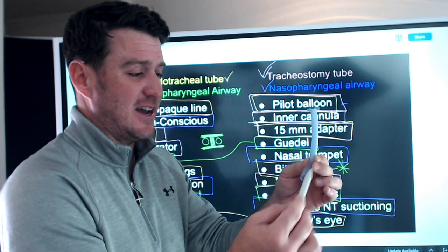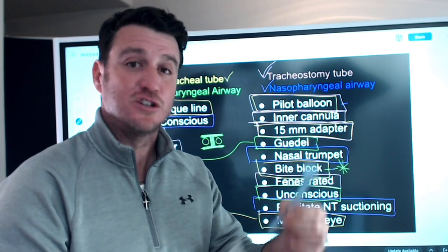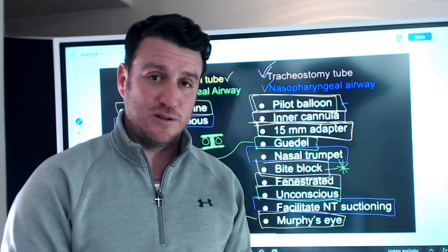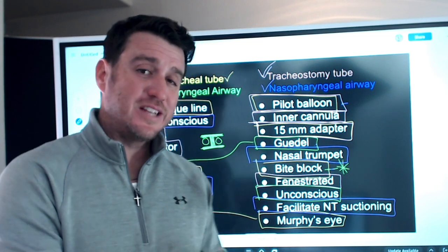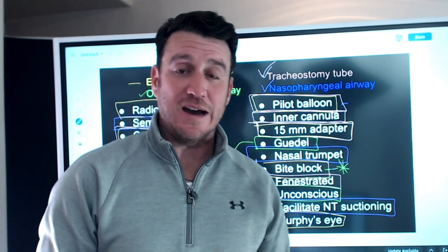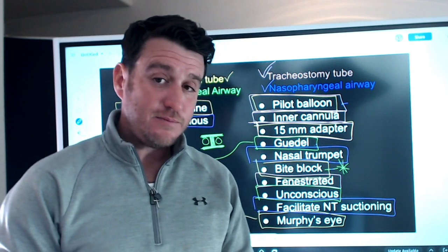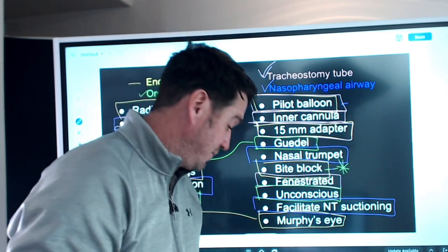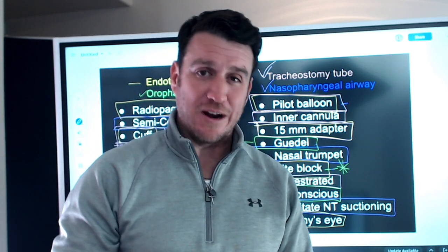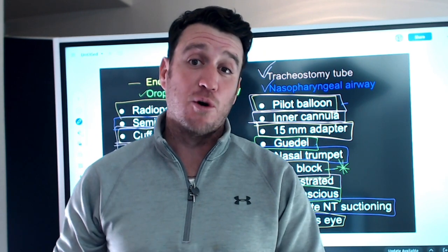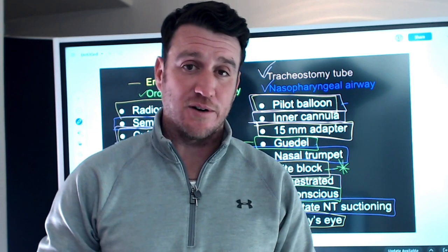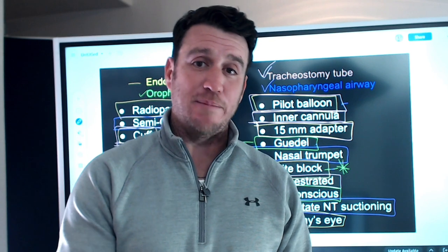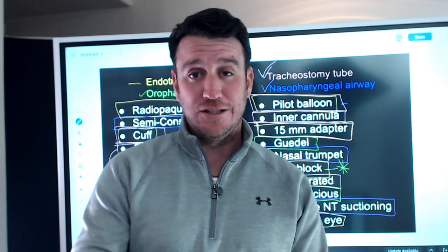Bite block — doesn't go in the mouth, so no. No fenestrations. Unconscious — you can use this in an unconscious patient, but remember: if unconscious, use an oropharyngeal airway; if semi-conscious or conscious, use a nasopharyngeal airway. Murphy's eye does not go here — we're not mechanically ventilating through this. Those are our four airways. There are others — king airways, combi-tube, LMA — but these four are most commonly tested on finals and the TMC exam. Average is easy, don't be it — go be great!